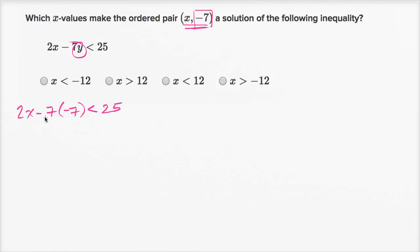And so this is going to be 2x minus negative 49, or 2x + 49 is less than 25.